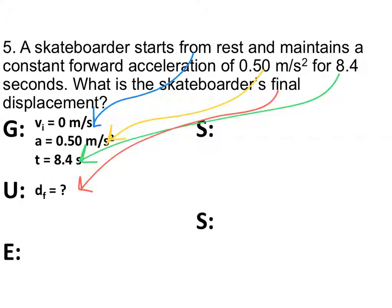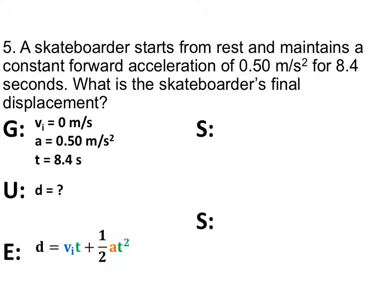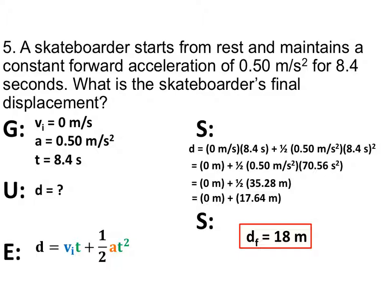When you look at your equations, you'll see that the equation using all three of those variables is d = vi·t + ½·a·t². Remember, the squared belongs just with the t, and you're multiplying one-half times a times t squared. Plugging in what we know: vi is zero, so zero times 8.4 gives zero for the first part. Then ½ times a times t squared. Adding it all up, your final answer is 17.64 meters — or you can round to 18. Either one is acceptable.